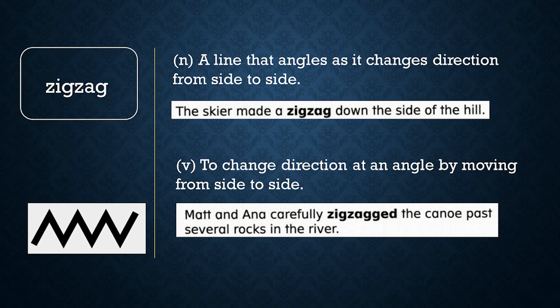Zigzag. Say, zigzag. Zigzag has two meanings. A zigzag is a line that angles as it changes direction from side to side. The skier made a zigzag down the side of the hill. To zigzag is to change direction at an angle by moving from side to side. Matt and Anna carefully zigzagged the canoe past several rocks in the river. Now let's review word meaning. True or false: when you're in heavy traffic, you should drive in a zigzag. If you said false, you're correct. You should drive in a straight line, not in a zigzag, to avoid hitting other cars.